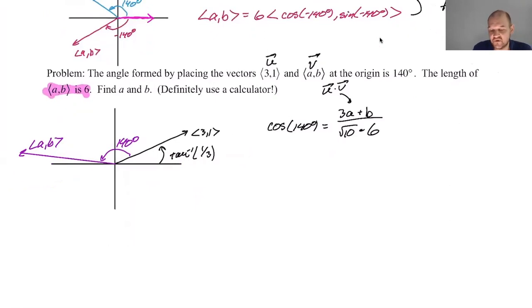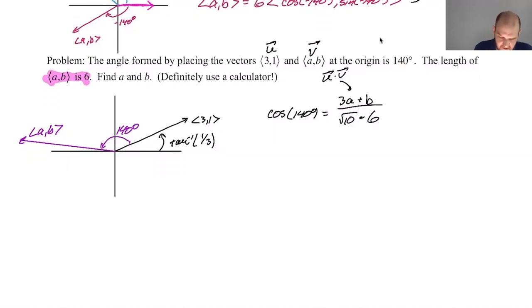So this is an equation that has two unknowns. I don't know what to really do with it, but that's one equation with two unknowns. And then I also, what else do I know? I know because I know the magnitude. I know the magnitude of a,b is six. So I know that a squared plus b squared is six squared is 36. This is two equations, two unknowns.